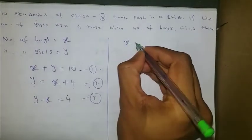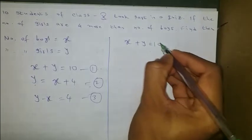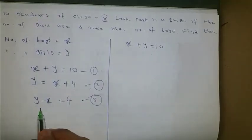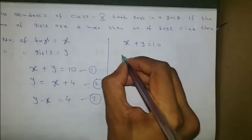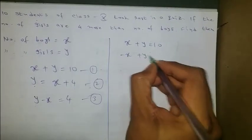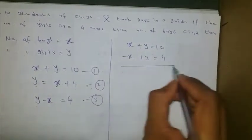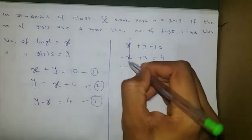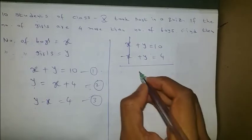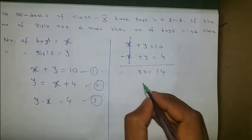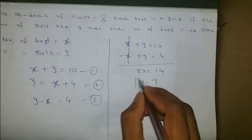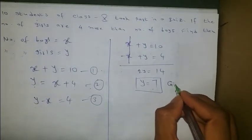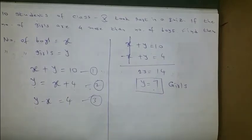First equation: x plus y equals 10. Equation 3 written as minus x plus y equals 4. Since one has plus x and one has minus x, I do addition. Plus x and minus x cancel. We get 2y equals 14, so y equals 7. y is the number of girls, so there are 7 girls.